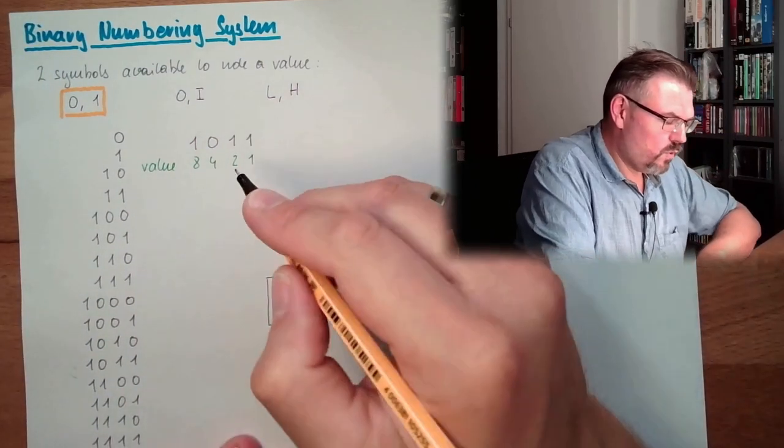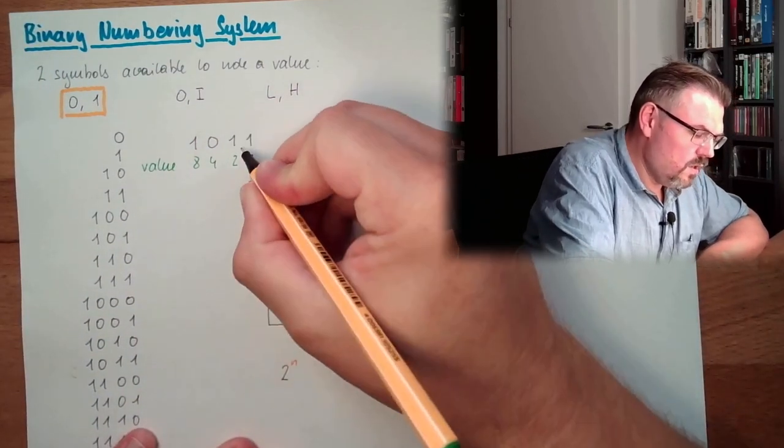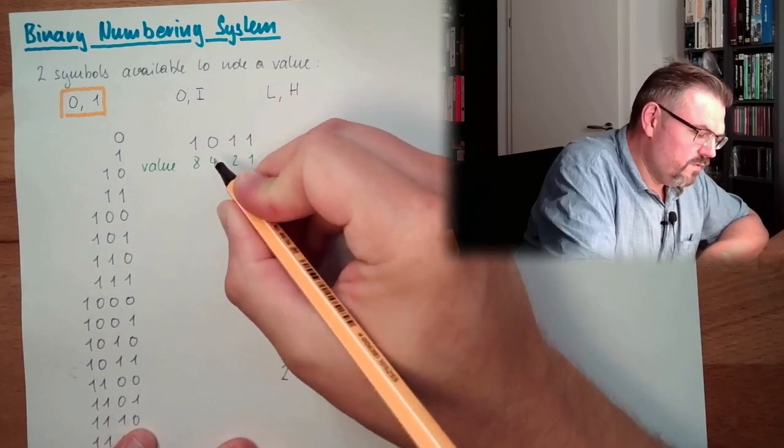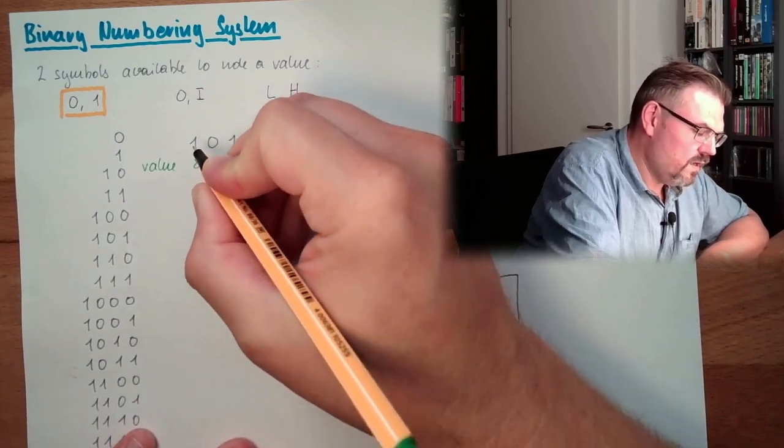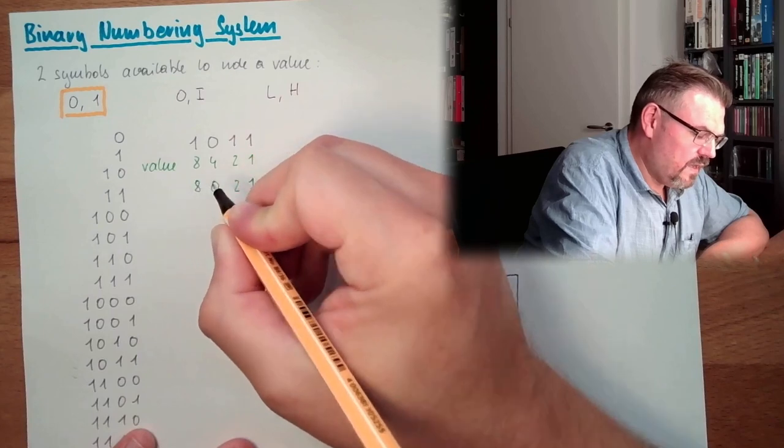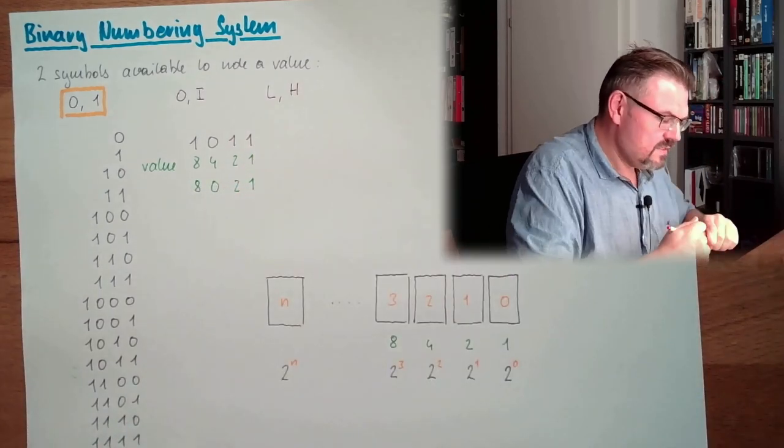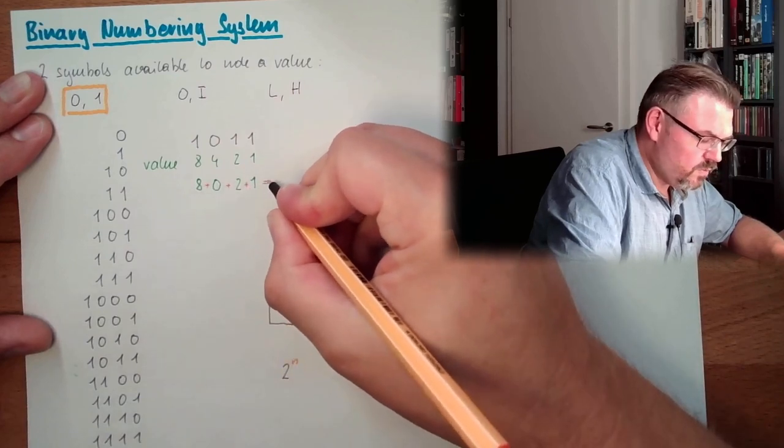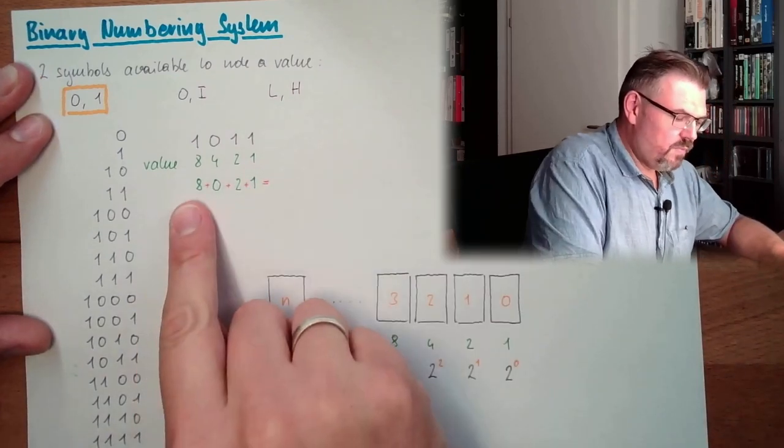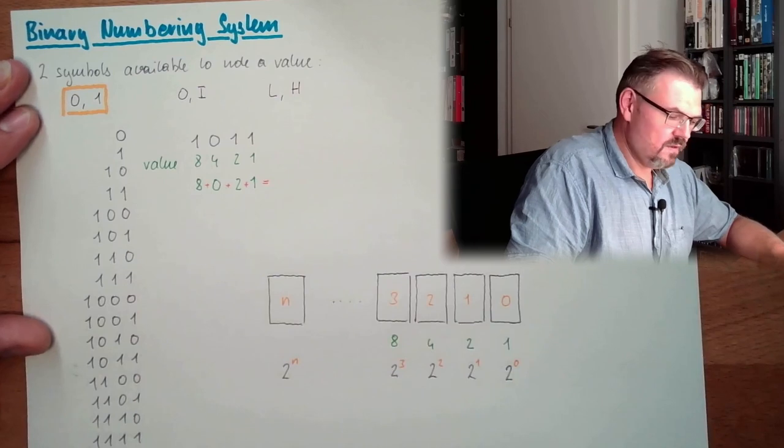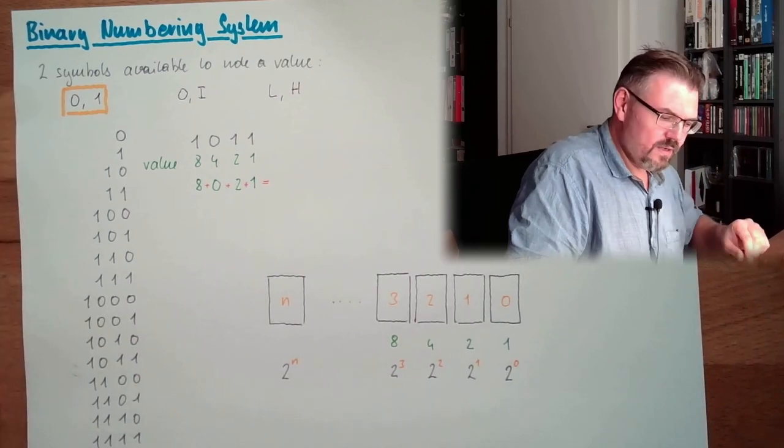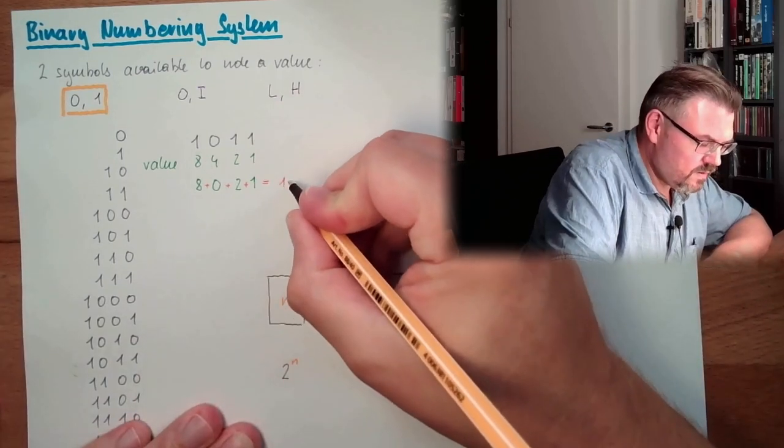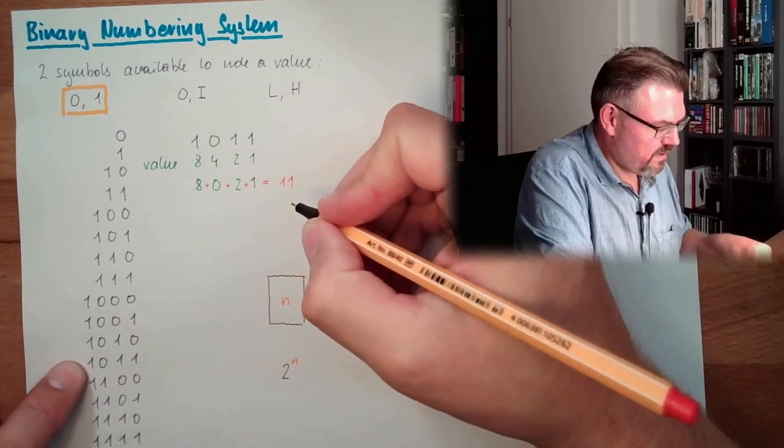So we have 1 times 1 is 1, we have 1 times 2 is 2, we have 0 times 4 is 0, and we have 1 times 8 is 8. And then I will add all of these: plus, plus, plus, equals. 8 plus 2 it's 11. The value is 11.